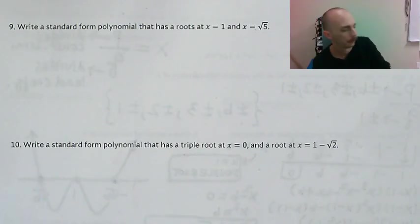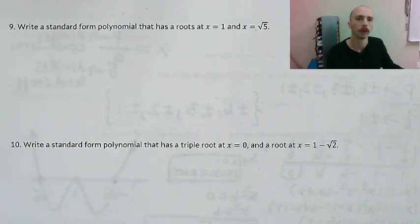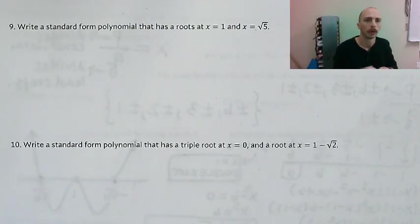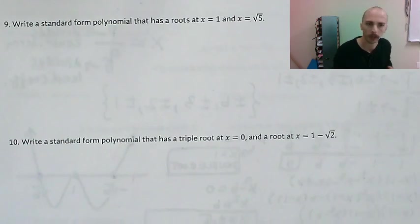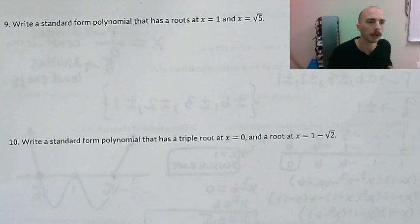All right, welcome back. Let's finish homework 6.4. We're going to move on to the second page and start with writing a standard form polynomial that has roots at 1 and square root of 5.